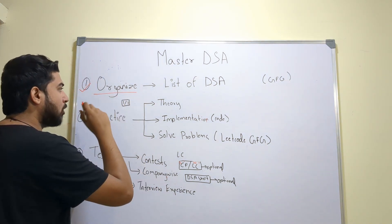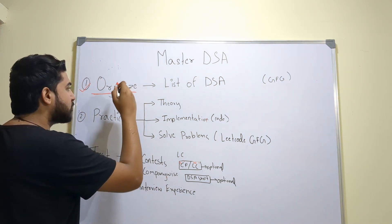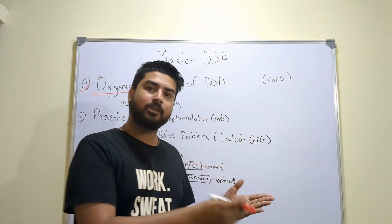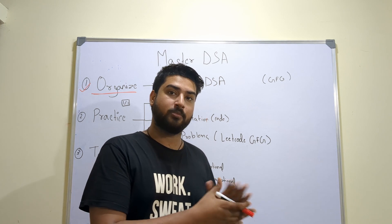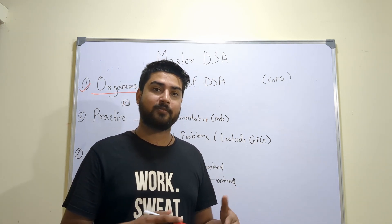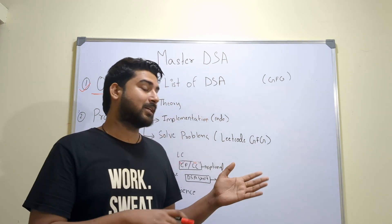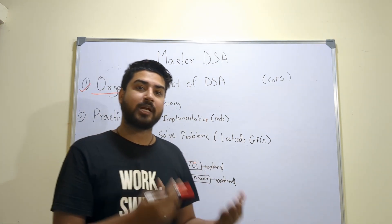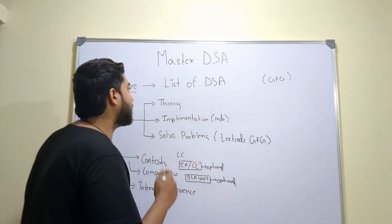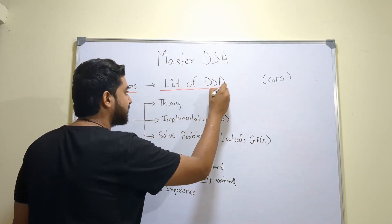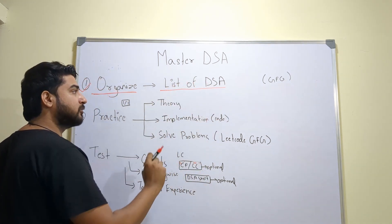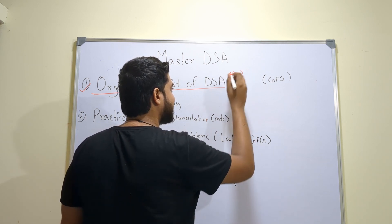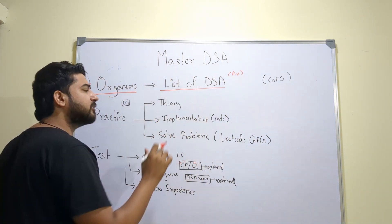The first step is to be organized. A mistake that a majority of students make while learning DSA is that they just go on LeetCode and start solving random problems. If you're just starting out on DSA, that's a very bad approach. You should learn it in an organized manner instead of random solving. Get a list of data structures and algorithms organized in an ascending order of difficulty.